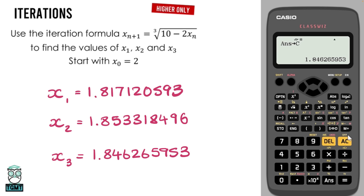Now that all three numbers are stored, press shift and then storage to recall them all at once and compare to what we've written down. This is particularly useful on questions where a result has seven or eight decimal places — you only write down three but keep the full value stored in the calculator. If you accidentally press a button and lose it, it's still stored. Write A, B, C or D next to your working so you know which letter to recall.